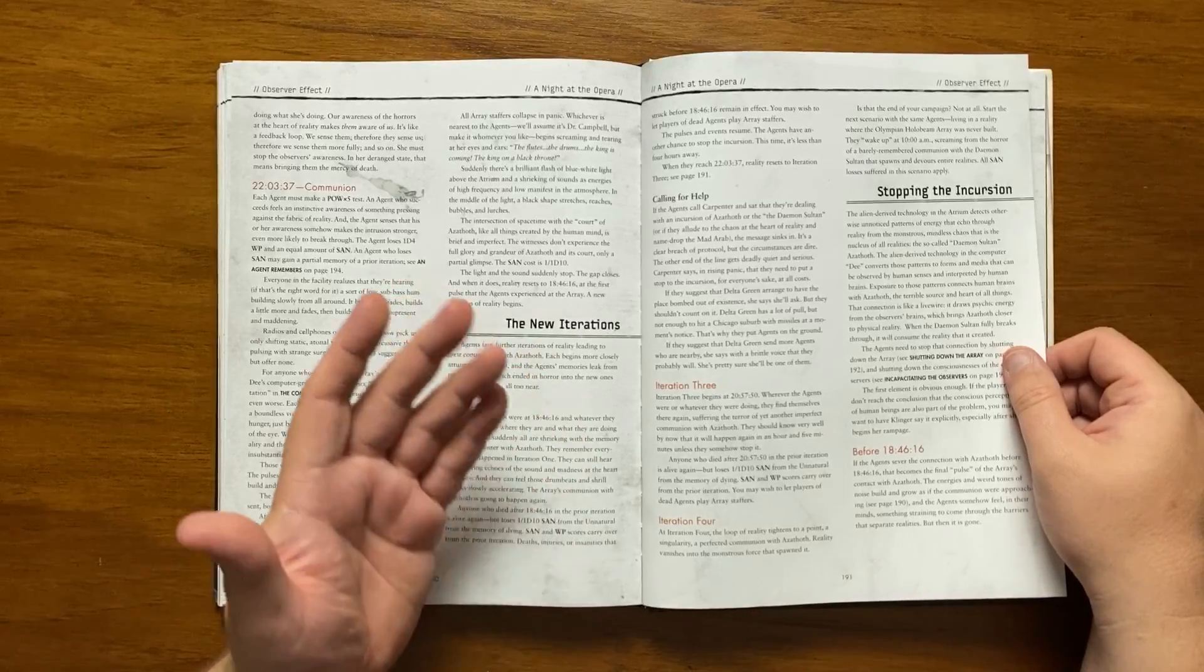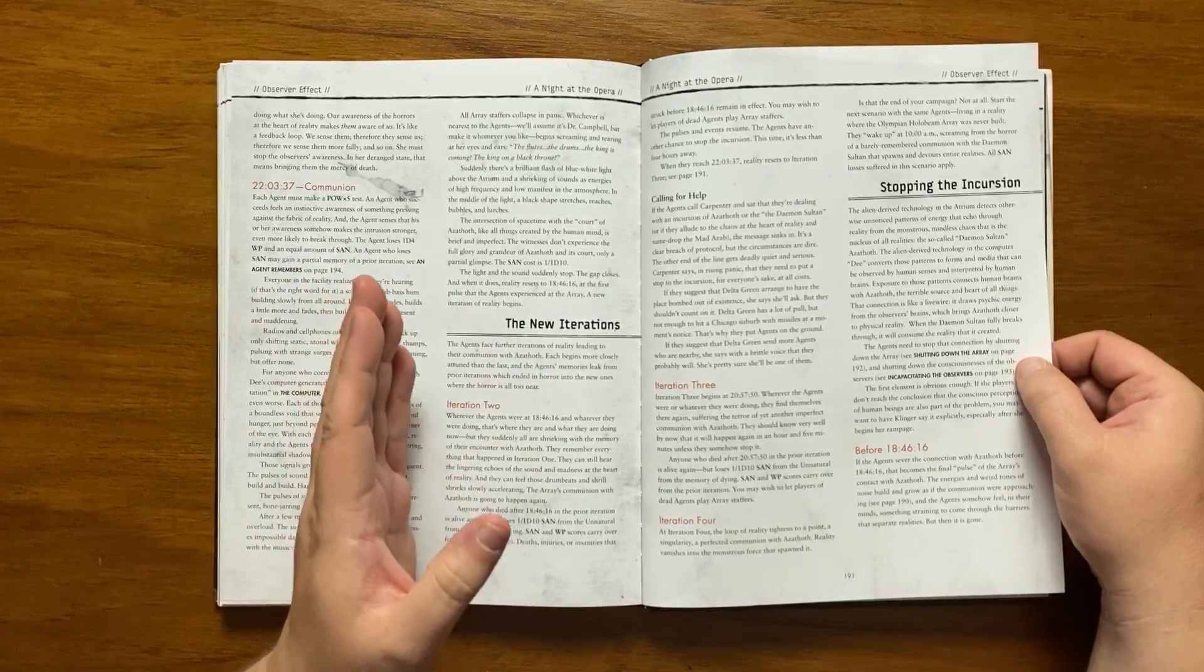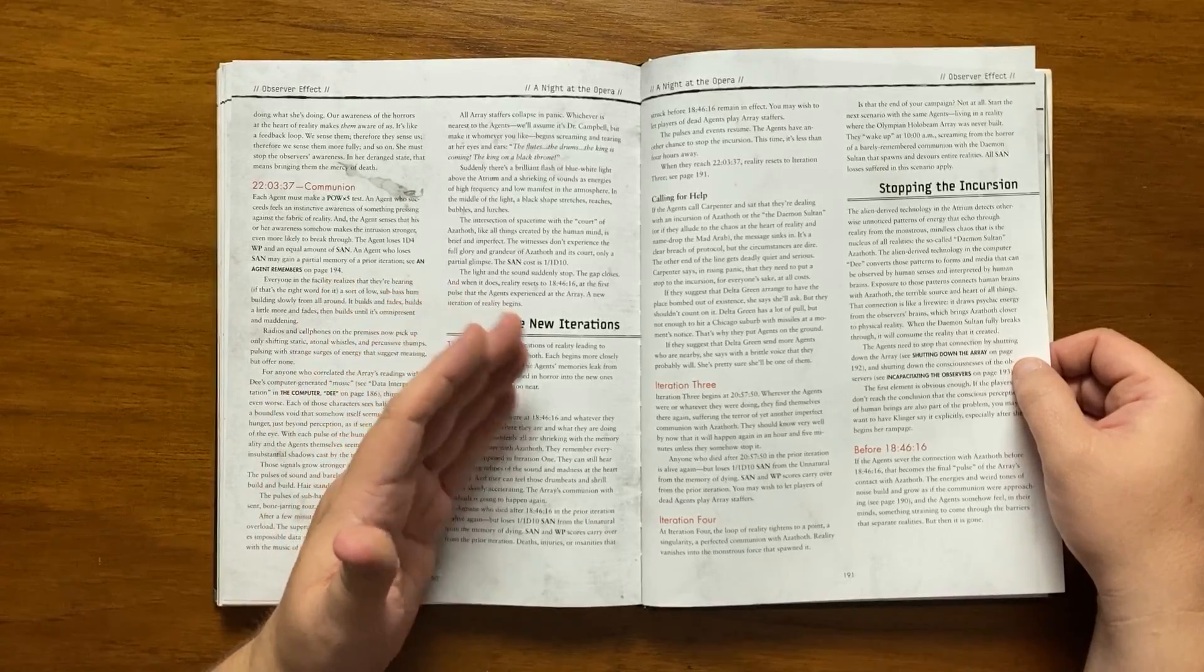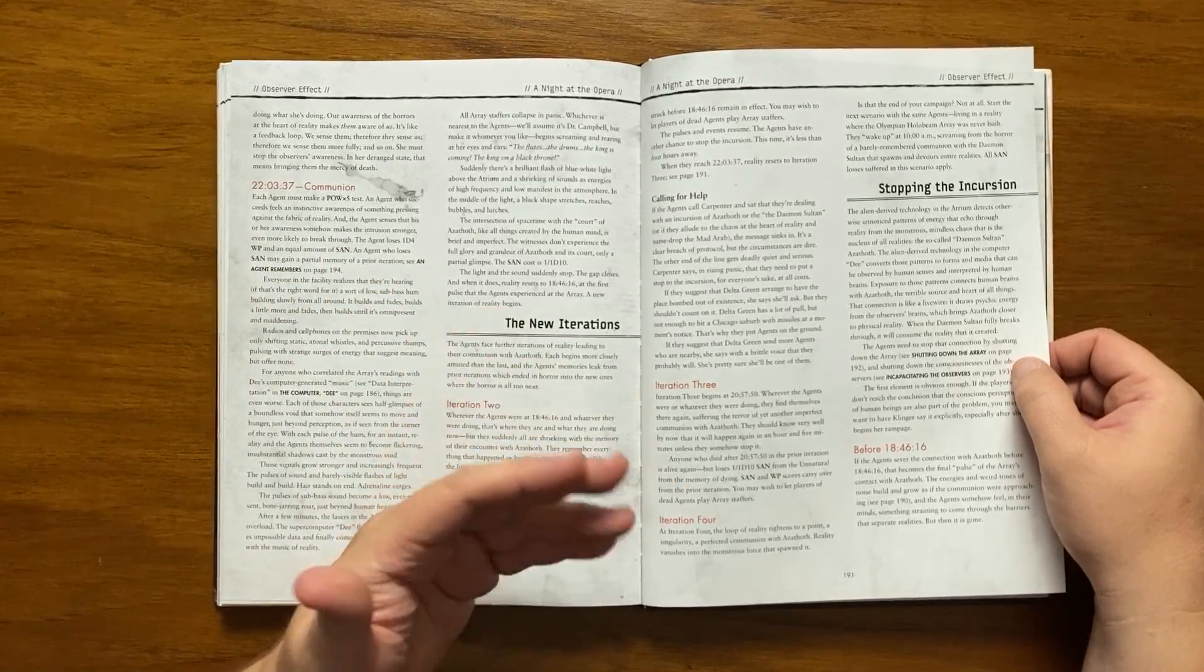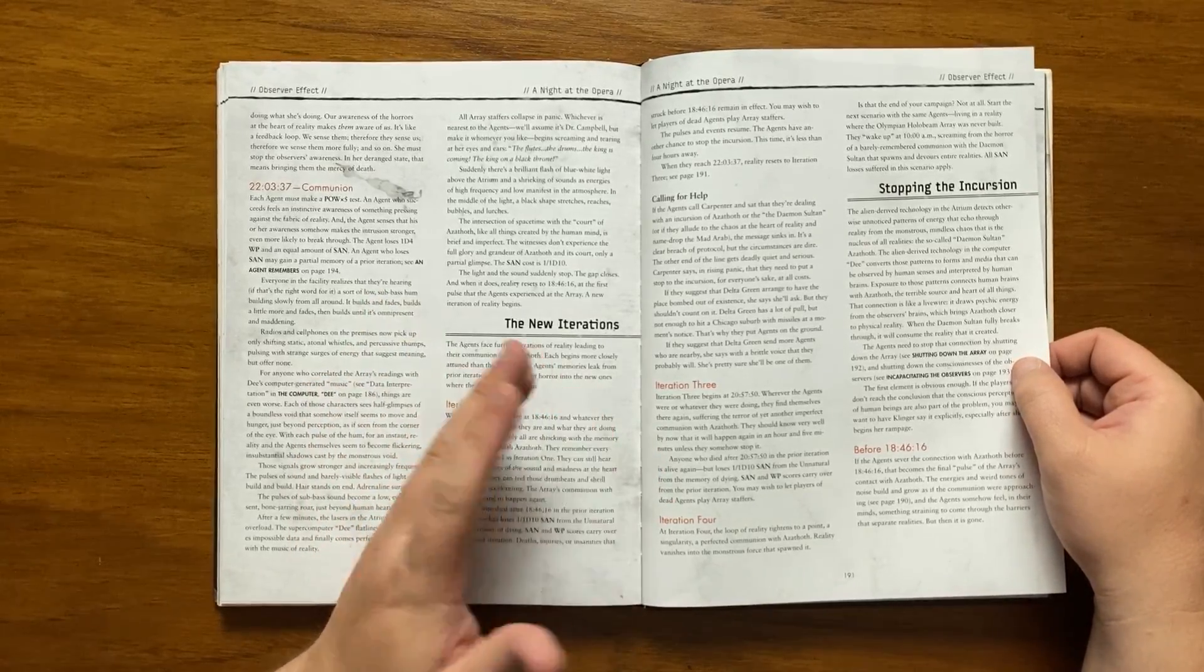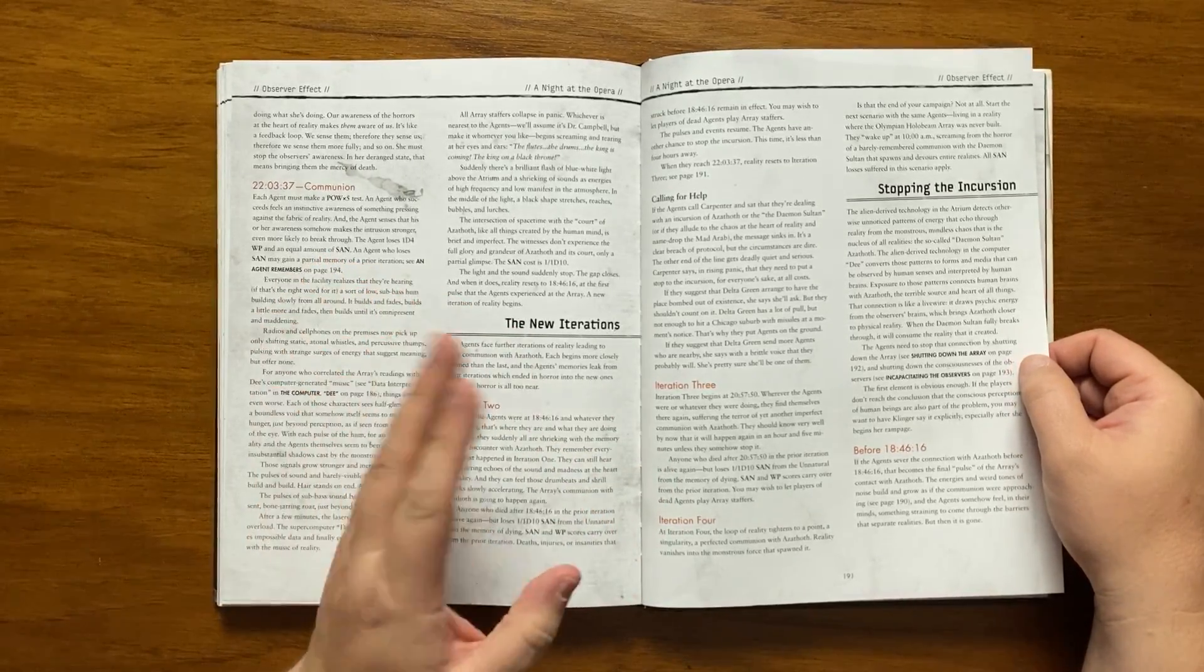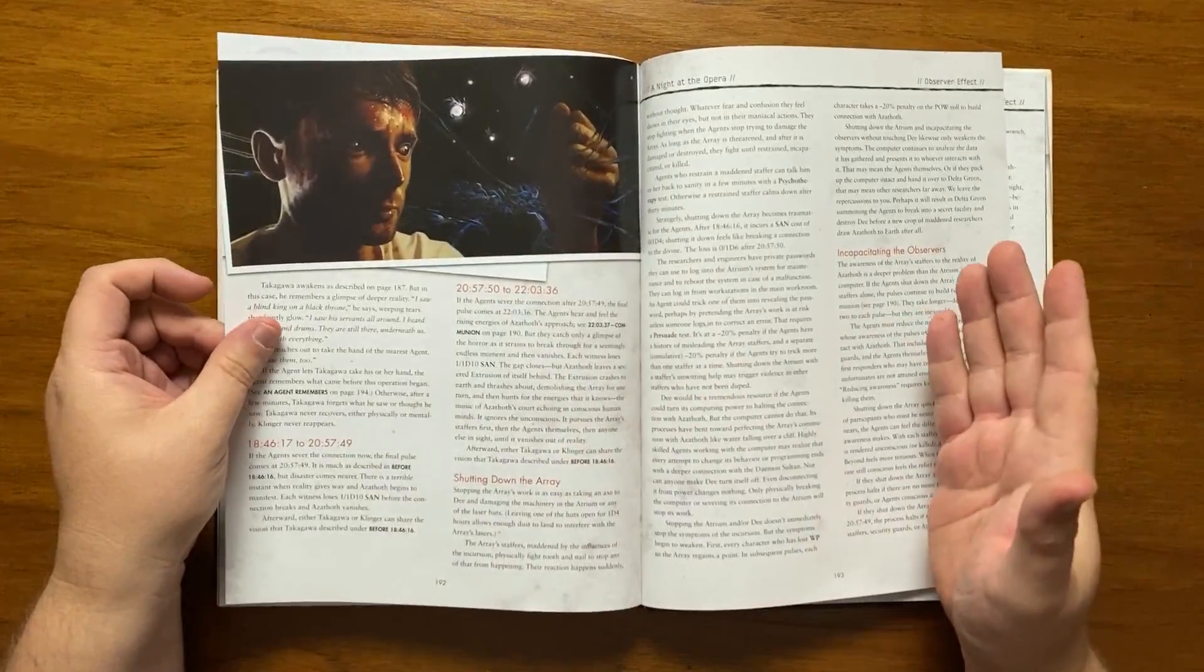It then moves on to how the agents should stop the incursions. The technologies that the array use otherwise unnoticed patterns of energy from Azathoth. D converts these patterns into a pattern that can be observed by humans. This connects the human brains to the demon sultan and is a live wire that draws psychic energy from the human brain which brings Azathoth closer to physical reality. The agents can stop this by shutting down the array and the consciousnesses of the observers there. Klinger can come to this conclusion if the players don't realise it. If it's done before 1846 then that is the final pulse of contact from the array to Azathoth and the energies and the strange tones build to a crescendo then suddenly stop.